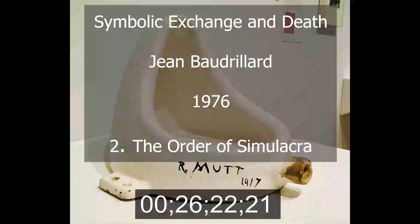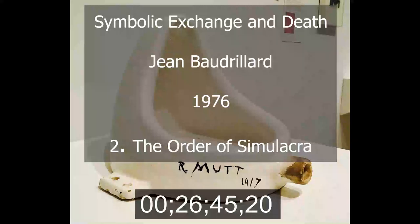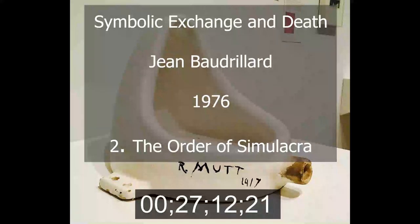Today, however, we know that all material production remains within the same sphere. Today we know that it is at the level of reproduction — fashion, the media, advertising, information, and communications networks — at the level of what Marx rather carelessly used to call the 'faux frais' of capital, immense historical irony, that is, in the sphere of simulacra and the code, that the unity of the whole process of capital is formed. Benjamin was also the first, with McLuhan after him, to grasp technology as a medium rather than a productive force, at which point the Marxian analysis retreats, as the form and principle of an entirely new generation of meaning.